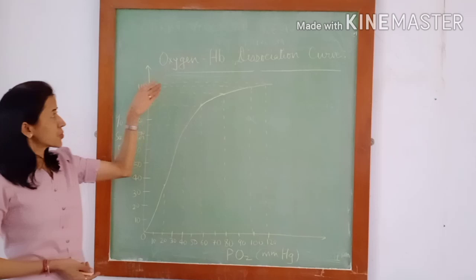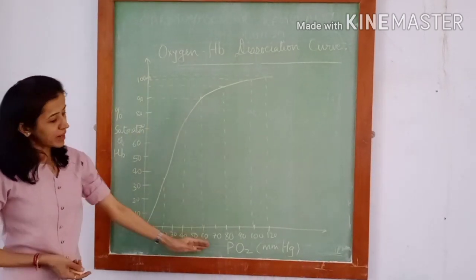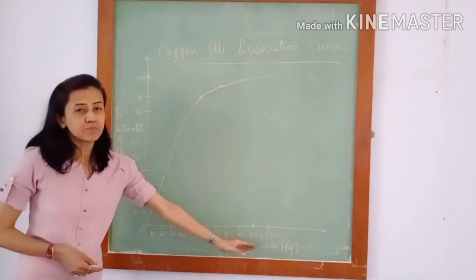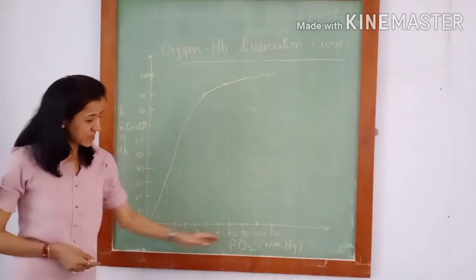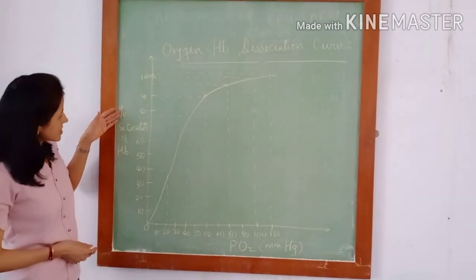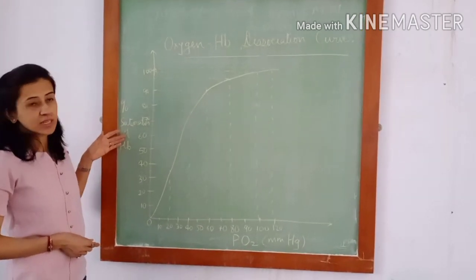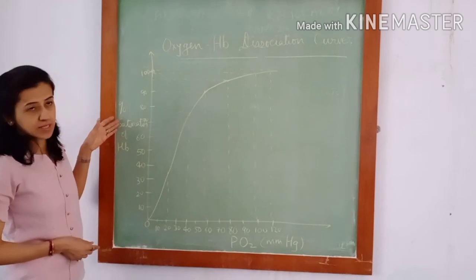This curve shows the relationship between partial pressure of oxygen in millimeters of mercury placed on the x-axis and percentage saturation of hemoglobin placed on the y-axis.